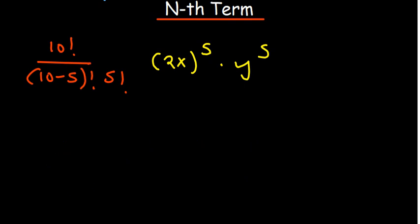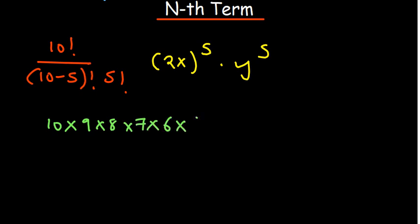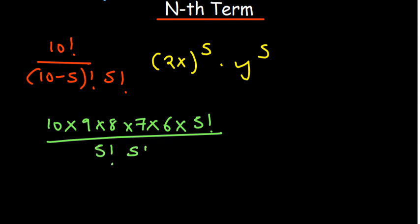So we have 10 factorial on top. The highest value on the bottom is 5 factorial, so we expand 10 factorial down: 10 × 9 × 8 × 7 × 6 × 5 factorial, divided by 5 factorial × 5 factorial. One of the 5 factorials cancels out.